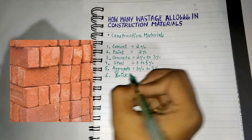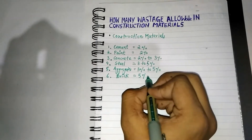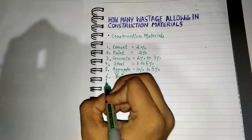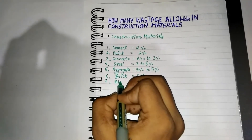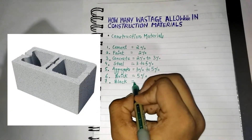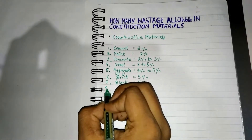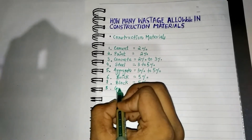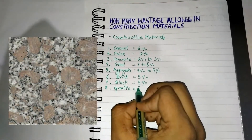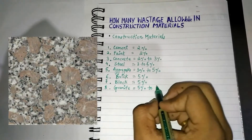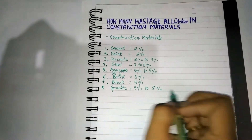Number six: Brick — five percent. Number seven: Block — five percent. Number eight: Granite — five to eight percent allowable wastage.